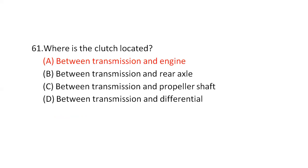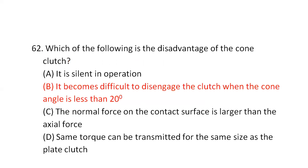Where is the clutch located? Option A — between the transmission and the engine. Which of the following is a disadvantage of the cone clutch? It becomes difficult to disengage the clutch when the cone angle is less than 20 degrees.